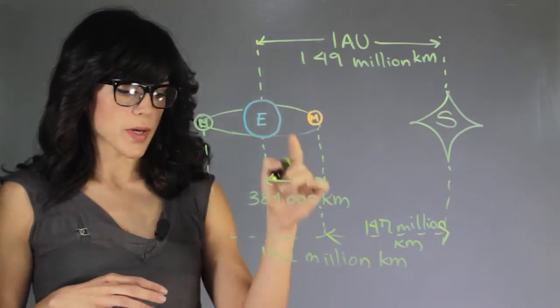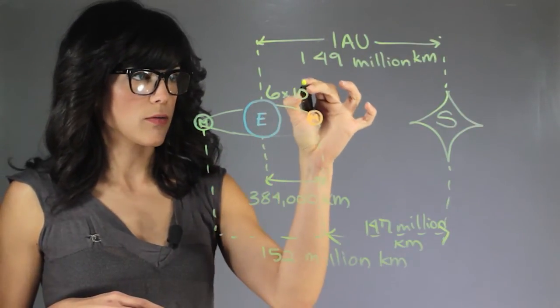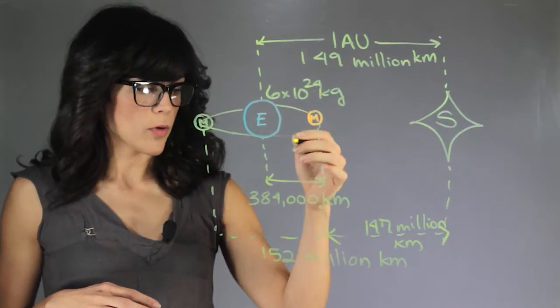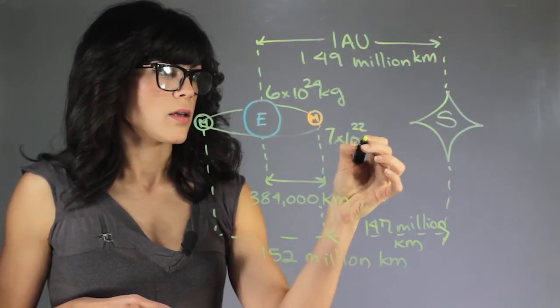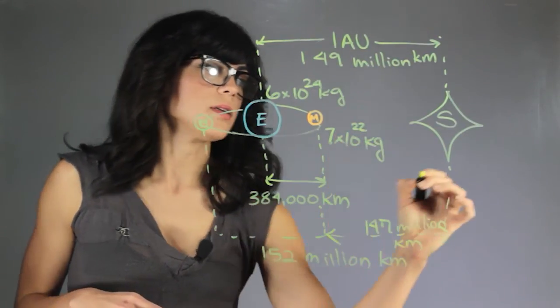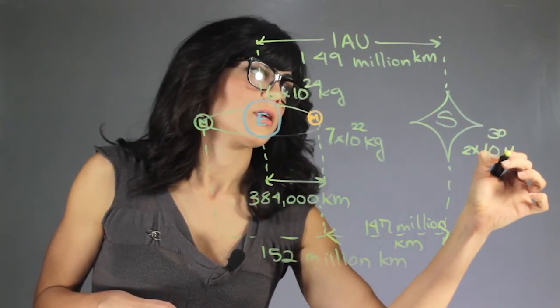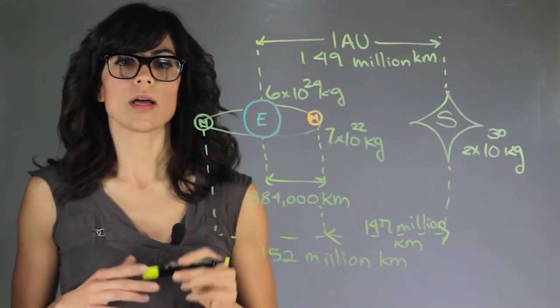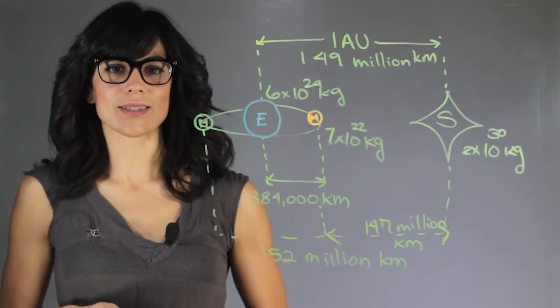Now for the masses we have the mass of the Earth which is 6 times 10 to the 24 kilograms and for the Moon we have 7 times 10 to the 22nd kilograms and then the Sun is 2 times 10 to the 30th kilograms and these are the sizes and the distances in the Earth, Moon and Sun system. My name is Aileen Buras and I'm an astrophysicist.